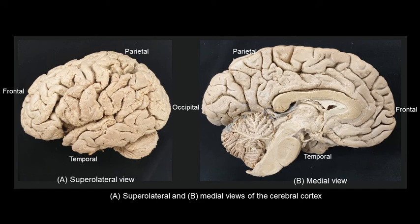As usual, as a first step when we look at any picture of a prosection, the first step is to orientate the prosection or that picture of the prosection. What you're looking at on the right is the medial surface of the cerebral hemisphere. This is a midline sagittal section taken through the brain, so the right cerebral hemisphere has been removed and the left cerebral hemisphere can be seen from the medial side.